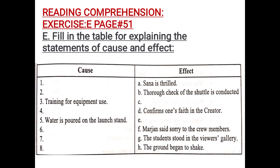Again, in six, seven, and eight, the causes are missing. Firstly, Marjan said sorry to the crew member — so why did she say sorry? You have to write the reason. In seven, the students stood in the viewer's gallery — this was the result, so you have to write the reason why they were standing there. And lastly, the ground began to shake — so why was the ground shaking? You have to write the reason.